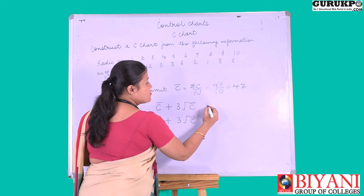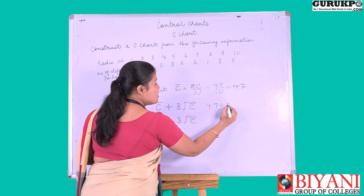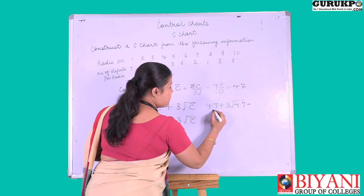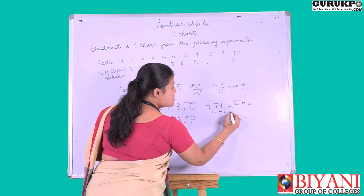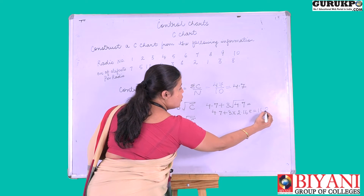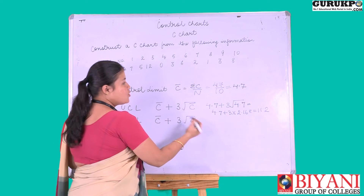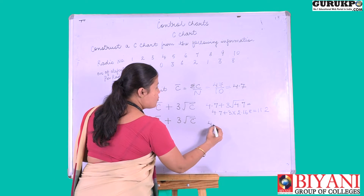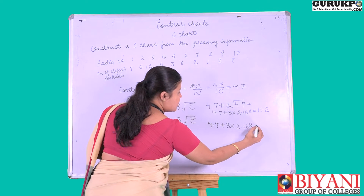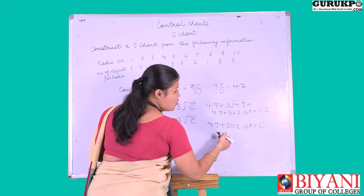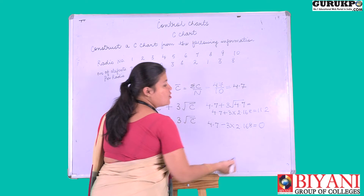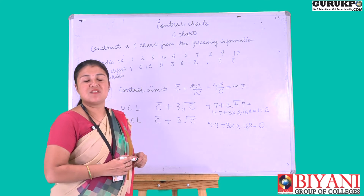Moving towards the upper control limit: c-bar is 4.7 plus 3 times the square root of 4.7, which comes to 11.2. This is your upper control limit. Moving towards the lower control limit: 4.7 minus 3 into 2.168 gives a negative value. Since the value arrived is negative, instead of putting the negative value, we count it as 0.